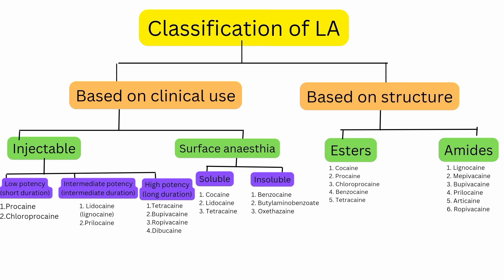The next drug is Prilocaine, which is also an amide with an intermediate duration of action. One important adverse effect to note: if you use Prilocaine, it can cause methemoglobinemia. Its vasodilatory effect is less compared to Lignocaine.